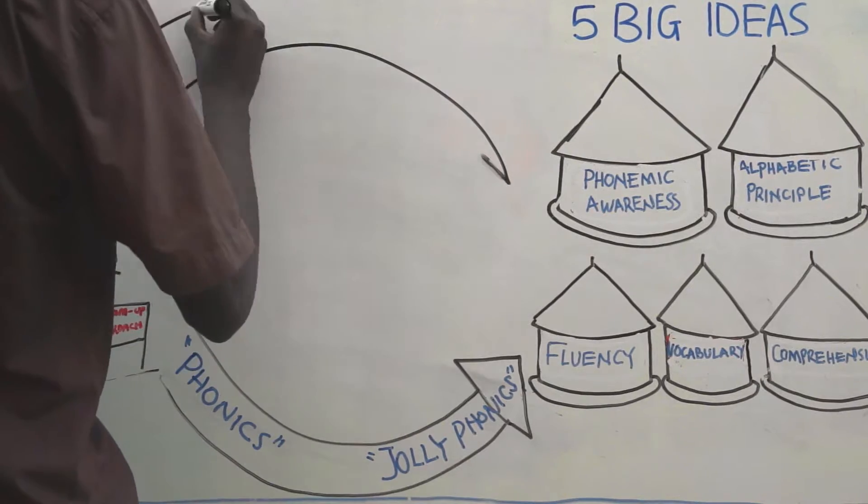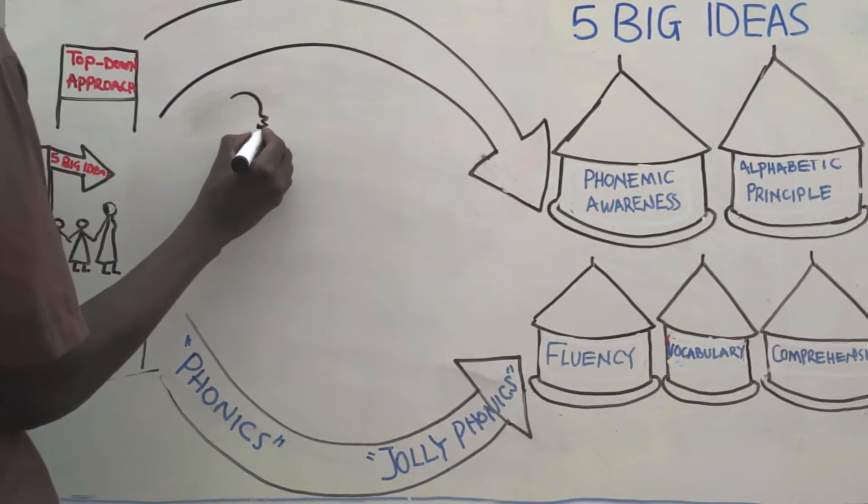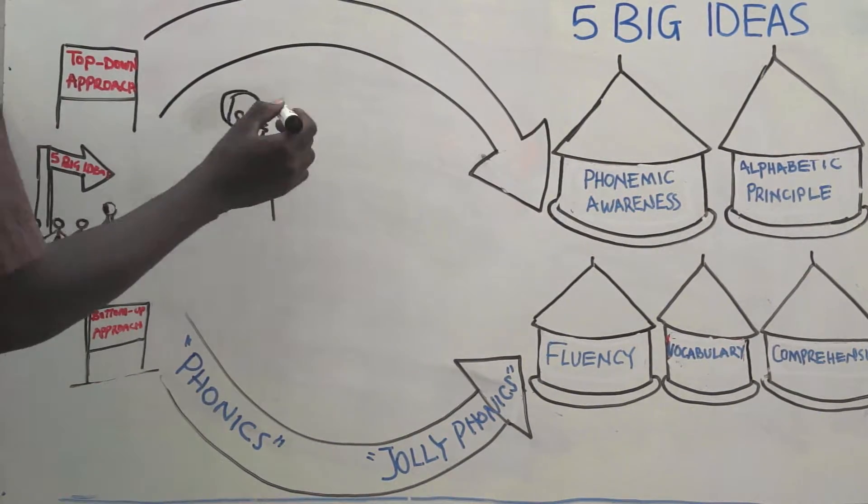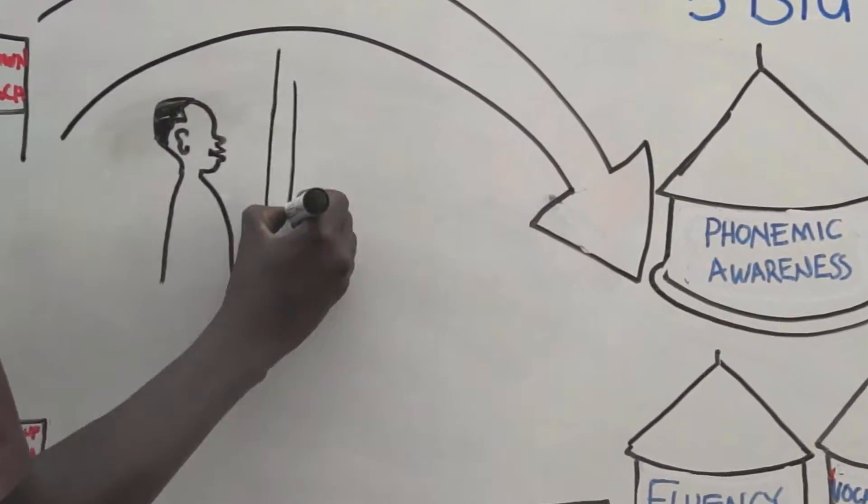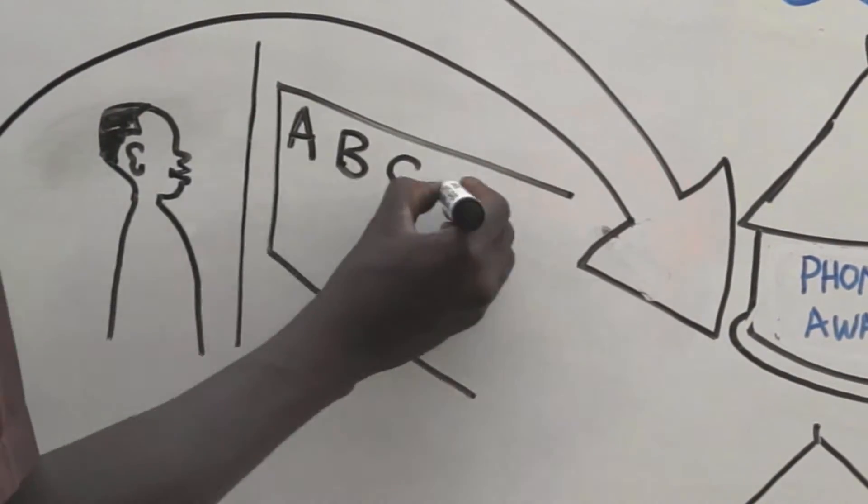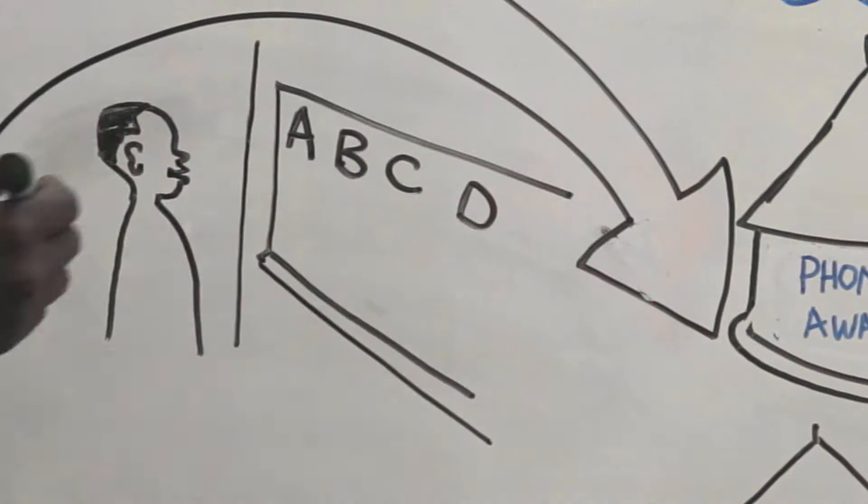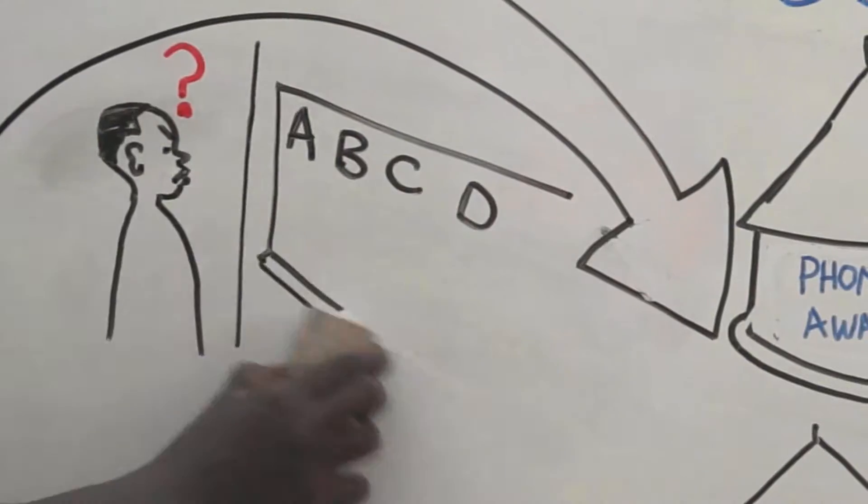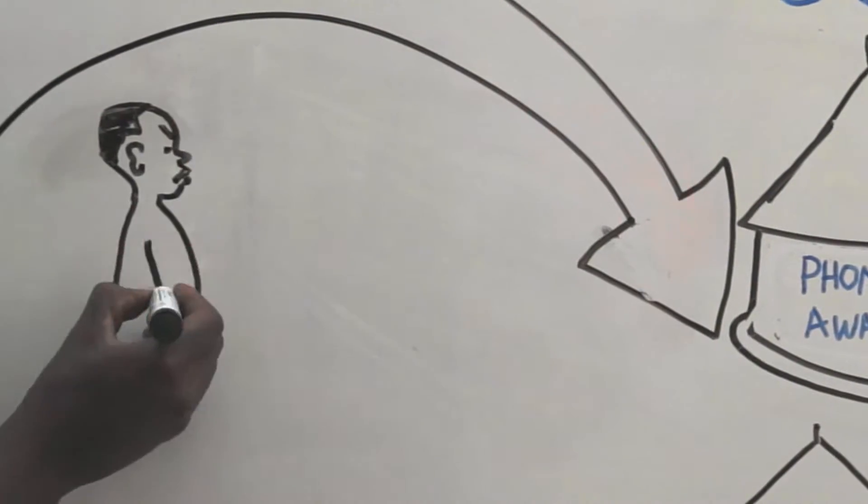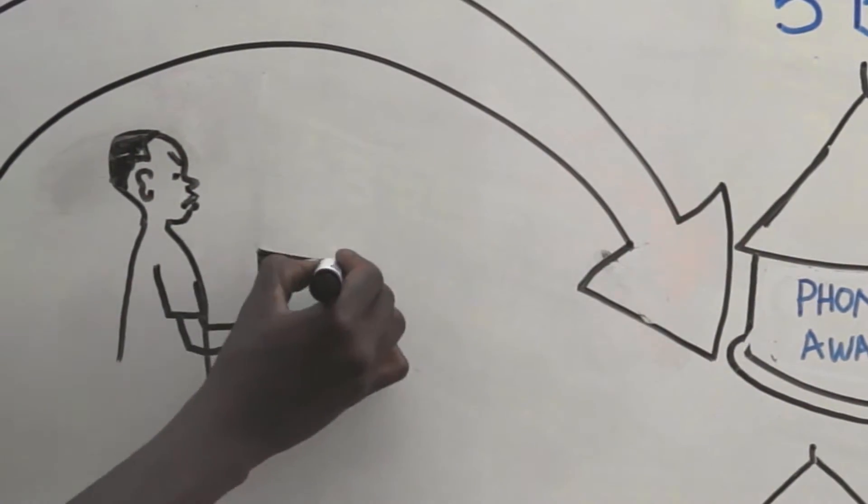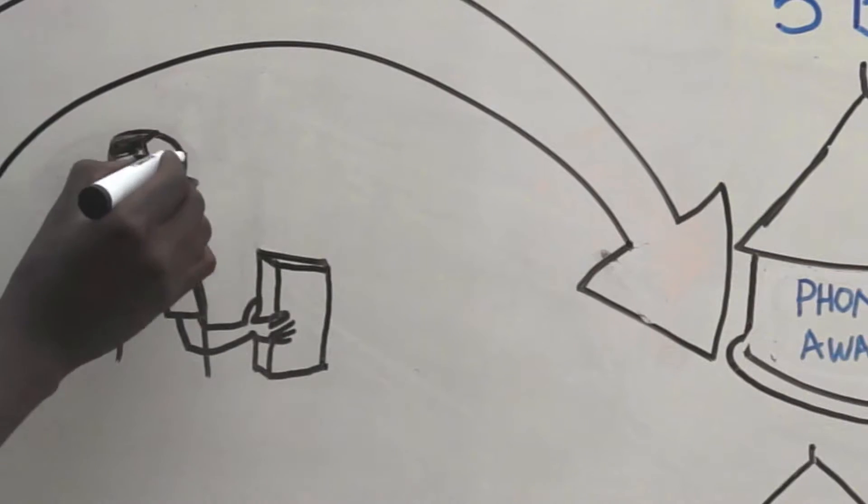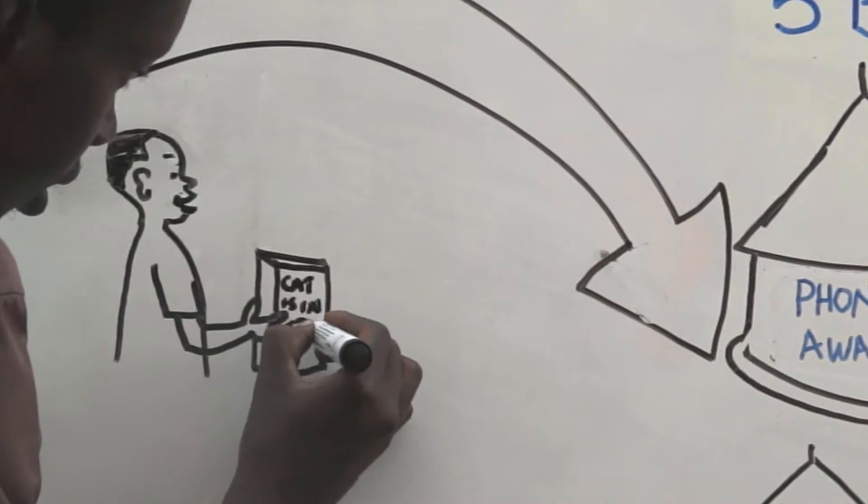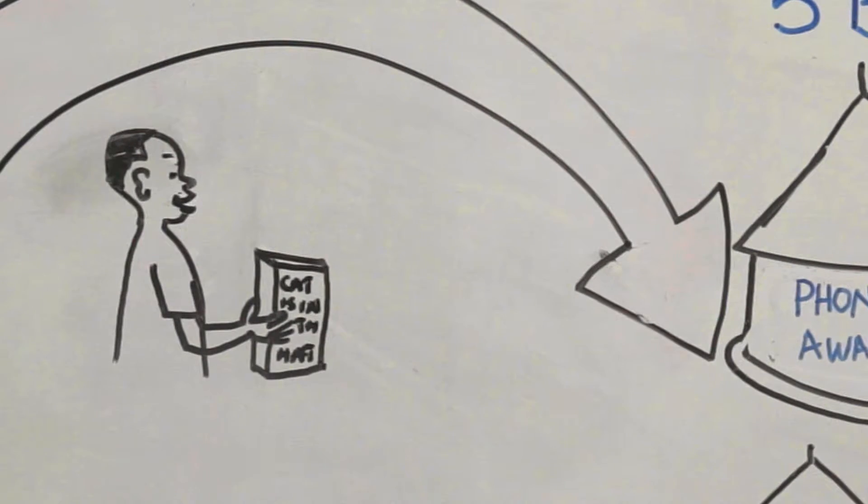A second path we call the top-down approach. One challenge that teachers have with a bottom-up approach is that letters, syllables, and even individual words are not very interesting or meaningful to children. And since reading is fundamentally about making meaning, some literacy teachers decided that a better place to start was at the top with stories.